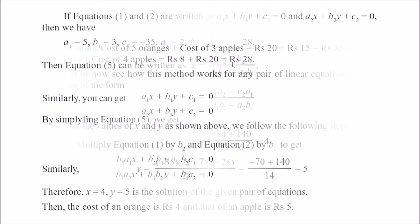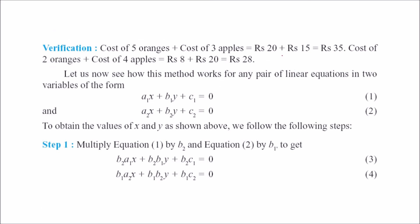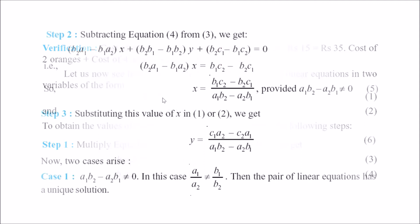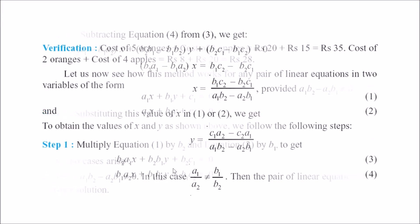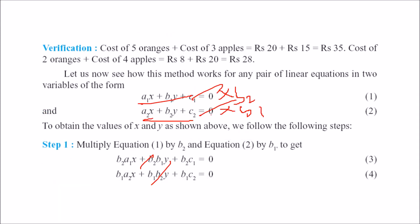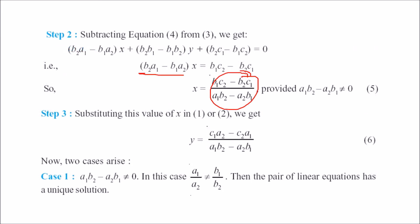To remember the formula: we multiplied the first equation by b2 and the second by b1 to eliminate the y terms. Once x is found, substitute it into either equation to find y. Note that the denominator (a1·b2 minus a2·b1) must not be zero — only then do you get a unique solution.